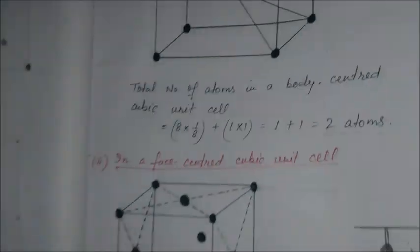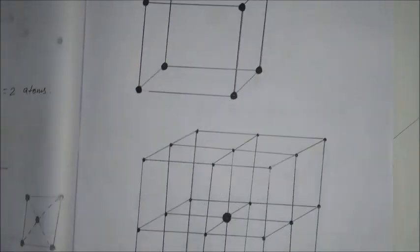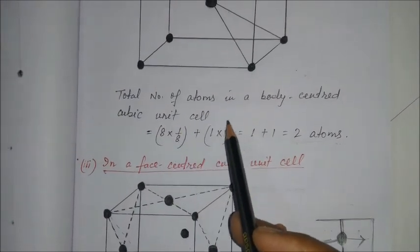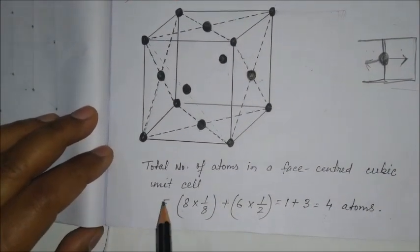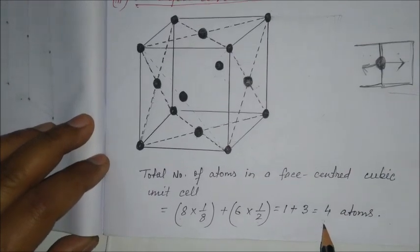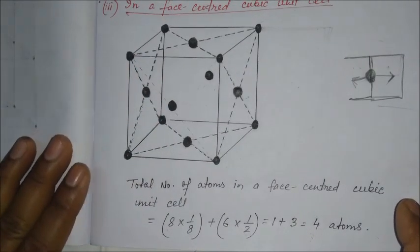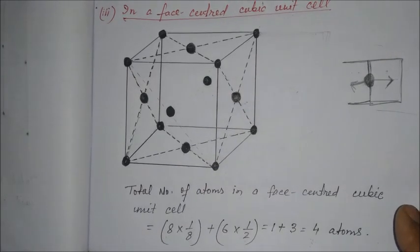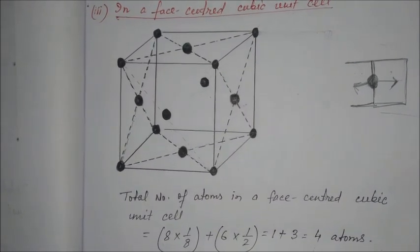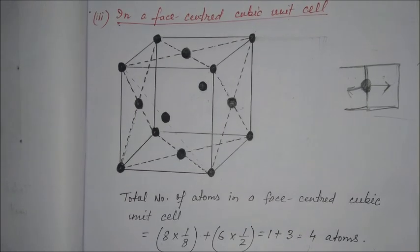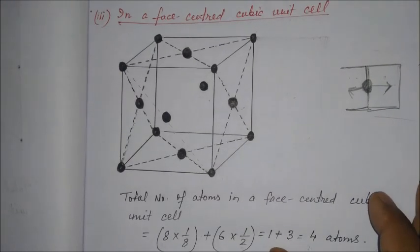So, to summarise: the total number of atoms in a primitive cubic unit cell is 1; in a body-centred cubic unit cell it is 2; and in a face-centred cubic unit cell it is 4. The next discussion will be on the topic of close-packed structures, covering close packing in 1 dimension, 2 dimensions, and 3 dimensions. Thank you, take care and have a good day.